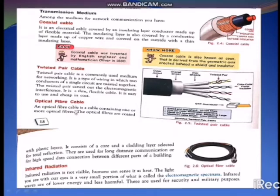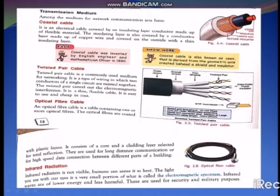Next one is the optical fiber cable. The optical fiber cable, as you see in this figure, is capable of containing one or more plastic fibers. They are coated with plastic layers. It consists of a core and a cladding layer selected for total internal reflection. They are used for long distance communication or for high speed data connection between different parts of a building.